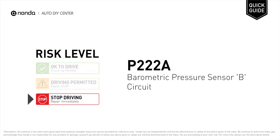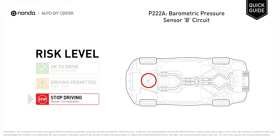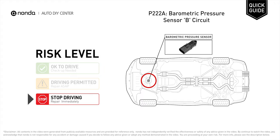B222A is a diagnostic trouble code for barometric pressure sensor B circuit malfunction. Under this circumstance, stop driving and repair your vehicle immediately. It indicates a general or specific malfunction within the barometric pressure B sensor or its circuits.